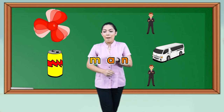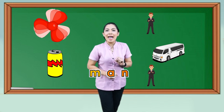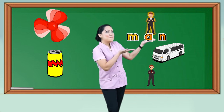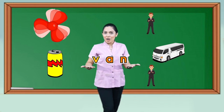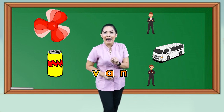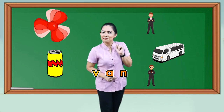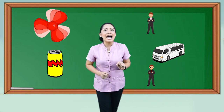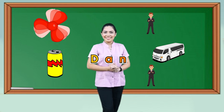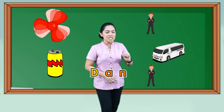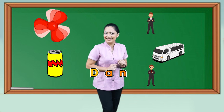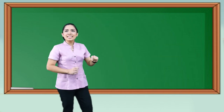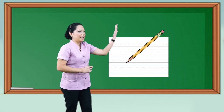Next word: Man. M-A-N. Man. Which one is man? Yes, that's man. Now let's have Van. V-A-N. Van. Which one is van? This is van. Great job!